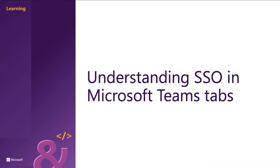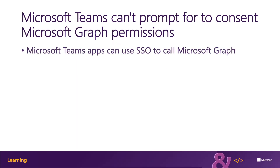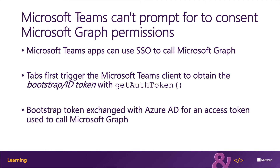Let's look at how the SSO process works at runtime with Microsoft Teams tabs. A Microsoft Teams app can use single sign-on to call Microsoft Graph. Tabs are first going to trigger the Microsoft Teams client to obtain the bootstrap token, otherwise known as the ID token, using the getAuthToken method from the Microsoft Teams JavaScript SDK. Once you get that bootstrap token, you can exchange it with Azure AD for an access token used to call Microsoft Graph.